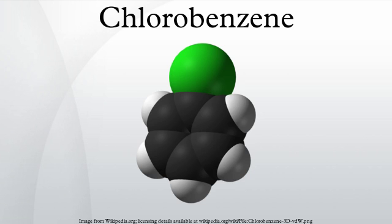At one time, chlorobenzene was the main precursor for the manufacture of phenol, via the reaction: C6H5Cl + NaOH → C6H5OH + NaCl.